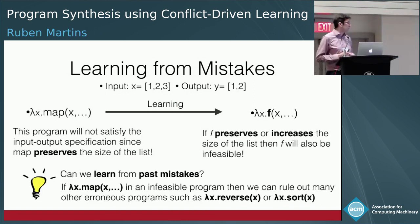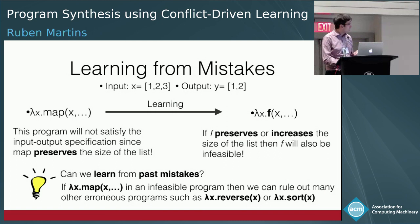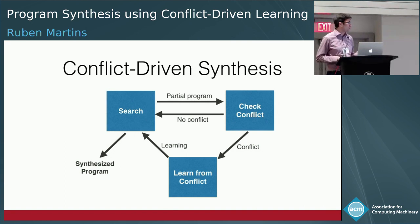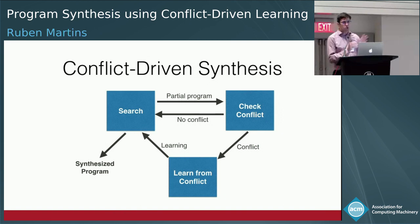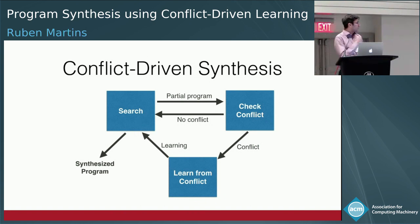Can we learn from these mistakes and instead of trying all possible combinations that share the same issue, can we prune several problems at the same time? If map doesn't work, we could also learn that reverse and sort won't work either because they also maintain the list size. We propose conflict-driven synthesis that combines different models: a search model using machine learning, a check-conflict model to determine if a partial program has a feasible completion, and a learn-from-conflict step to avoid similar mistakes in the future.